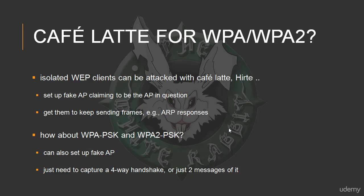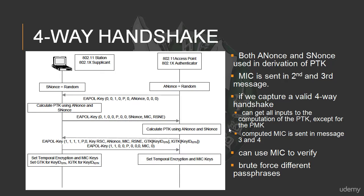What about WPA-PSK and WPA2-PSK — can we do something similar? Is there something like Cafe Latte for WPA and WPA2? In fact, there is. We can similarly set up a fake access point, and it's actually even easier in some ways than for WEP, because we don't have to induce the client to keep sending frames with different IVs. We just need to capture a four-way handshake — and in fact we don't even need the whole four-way handshake, just two messages of it. Let's take a look at the four-way handshake again to see whether a fake access point is able to provide its part without knowing the passphrase.